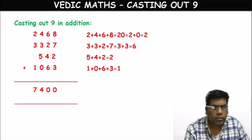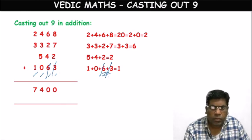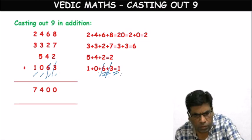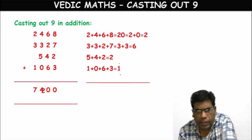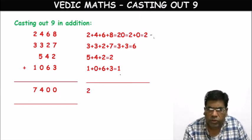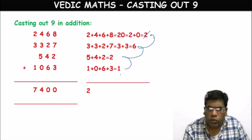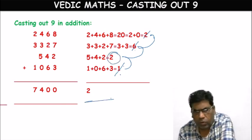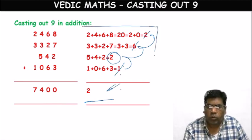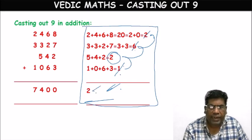Fourth number 1063: 6 plus 3 equals 9 — cast it out. 1 plus 0 remaining equals 1. Now we have single digits 2, 6, 2, and 1. Is there a possibility of 9? 2 plus 6 equals 8, 8 plus 1 equals 9 — cast it out. Only 2 is remaining. By Casting Out Nines technique, the final answer is 2.